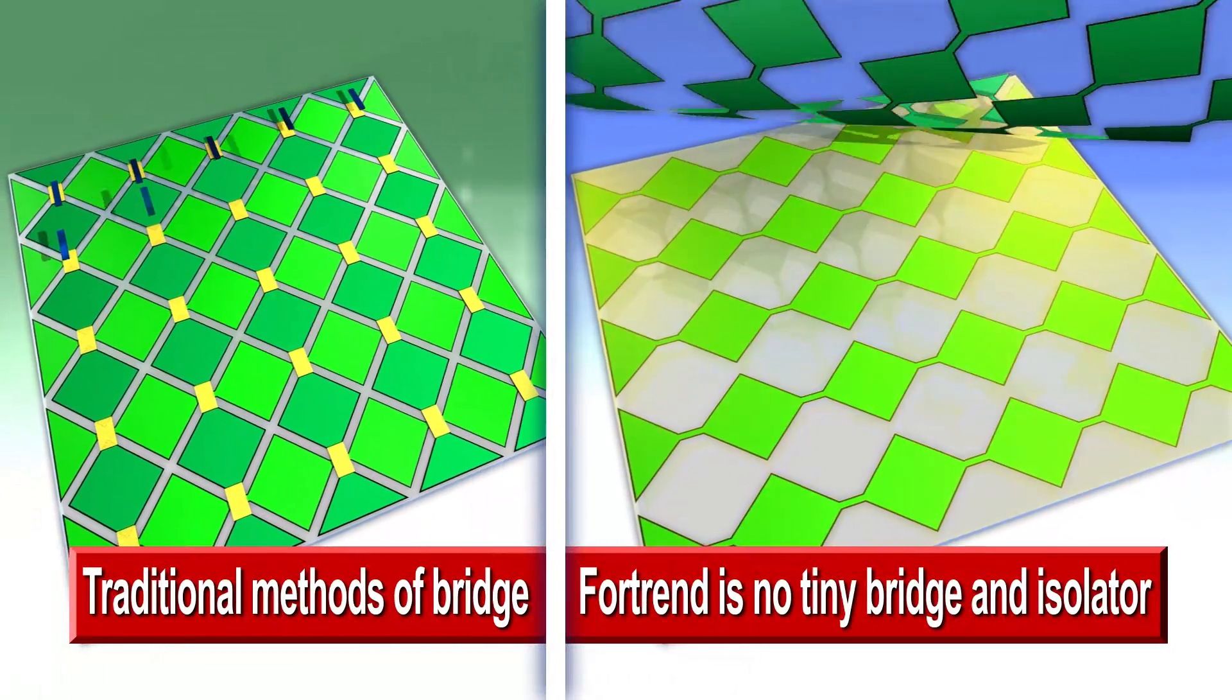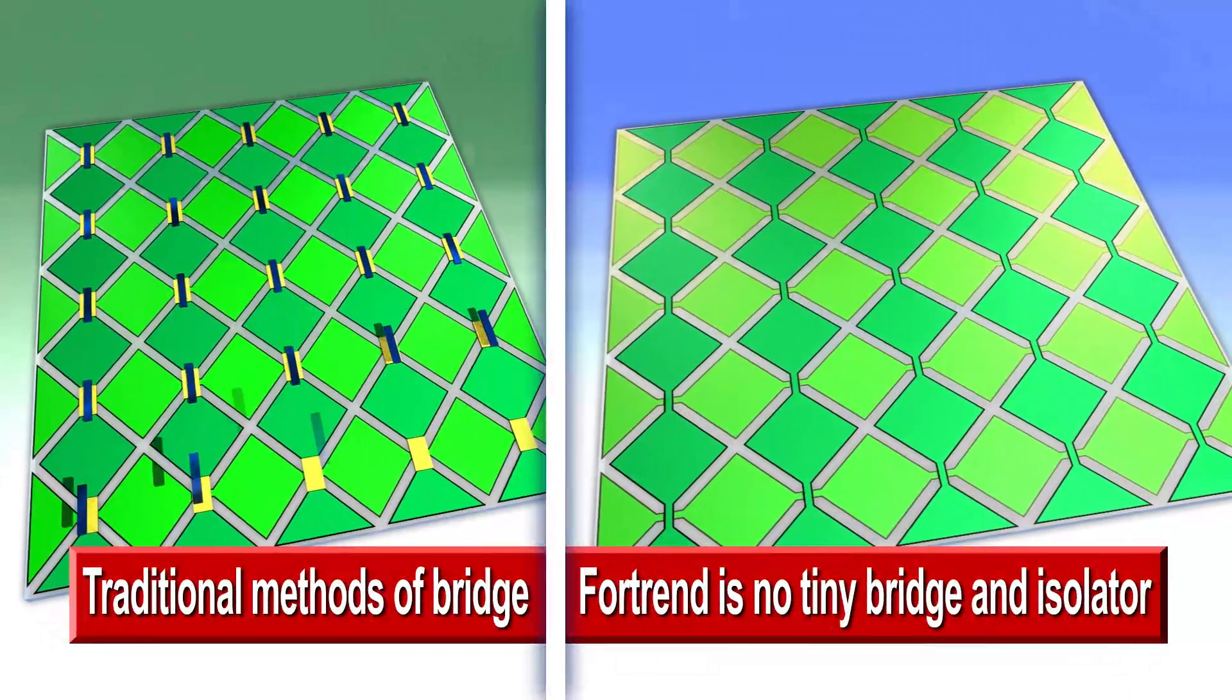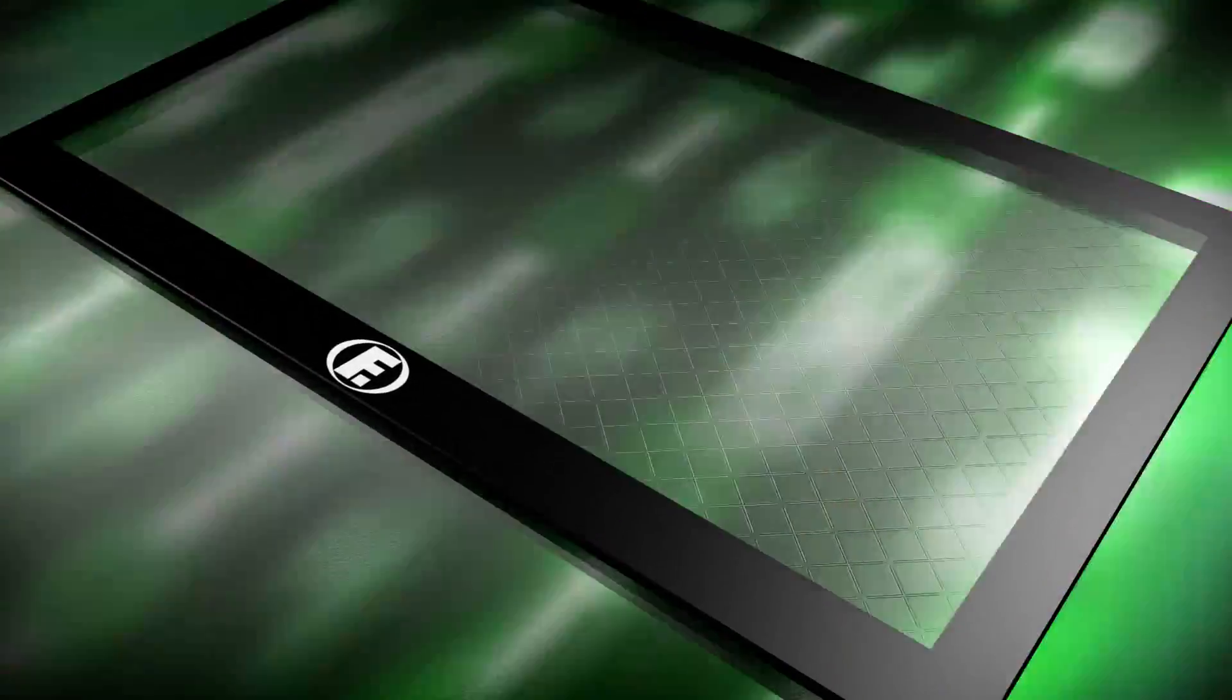There is no tiny bridge and isolator. The XY-axial electrode is combined in one single side of glass. There is no lamination between glass and glass or glass and film.